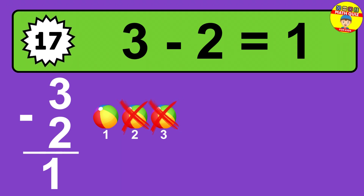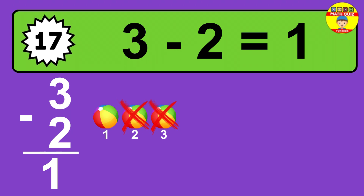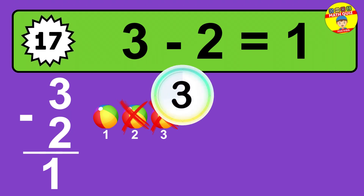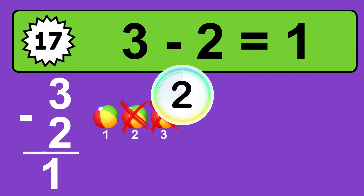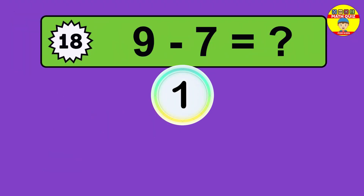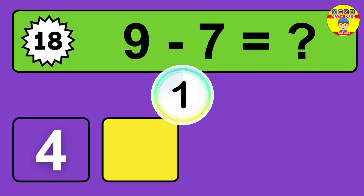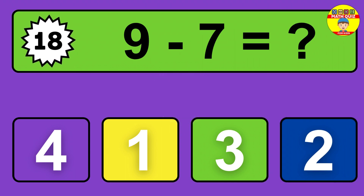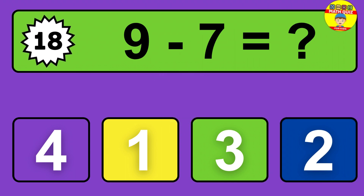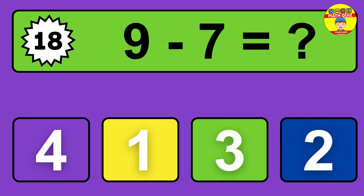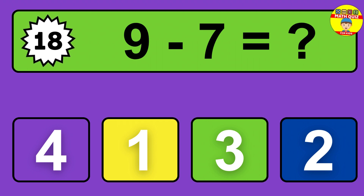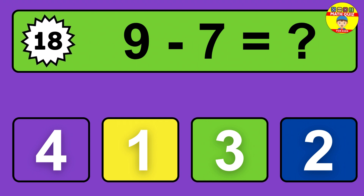Question nineteen: eight minus seven equals what? The answer is eight minus seven is one. Let's count it: one.